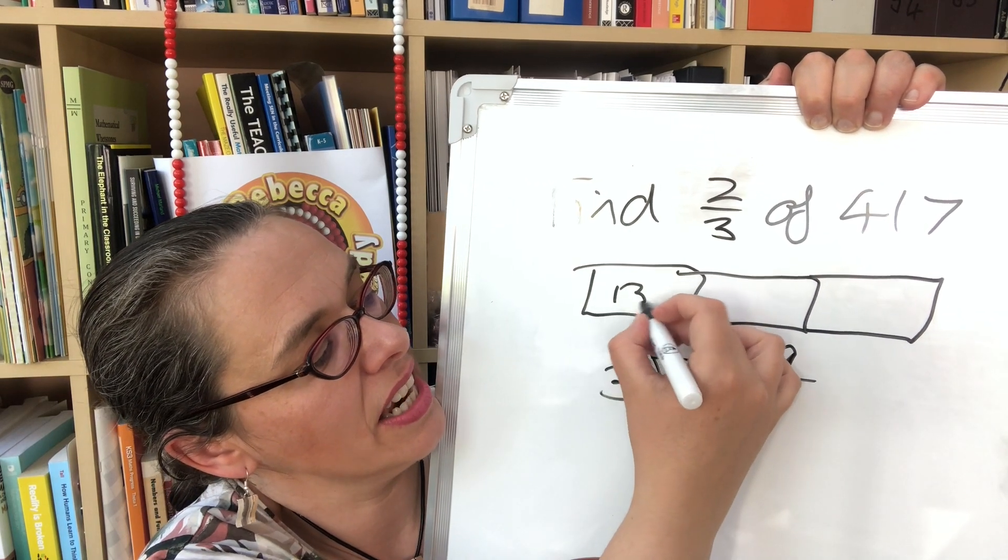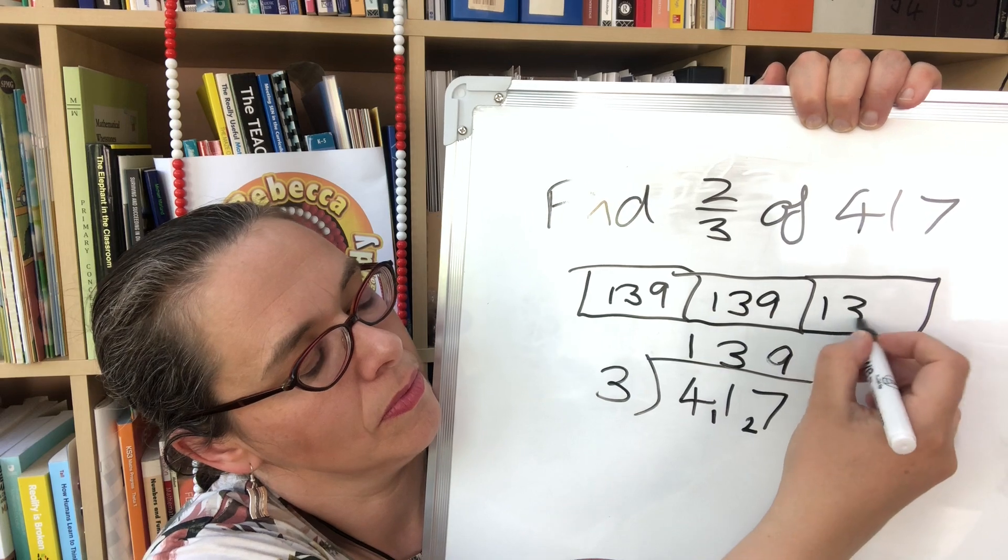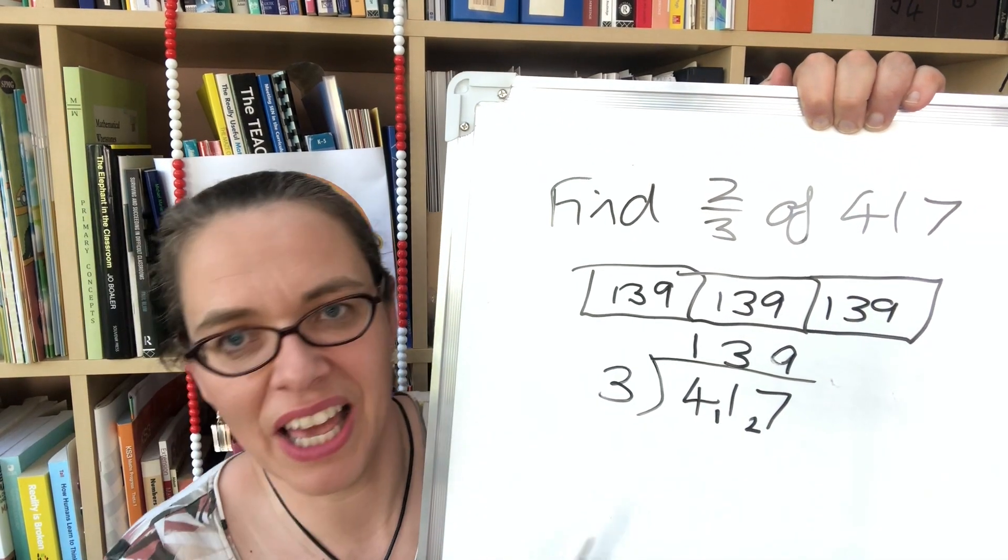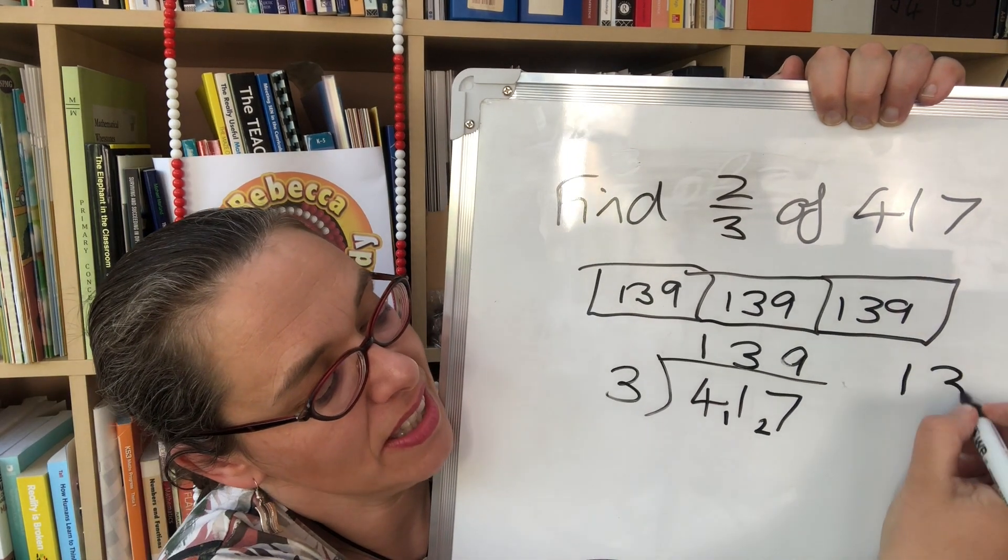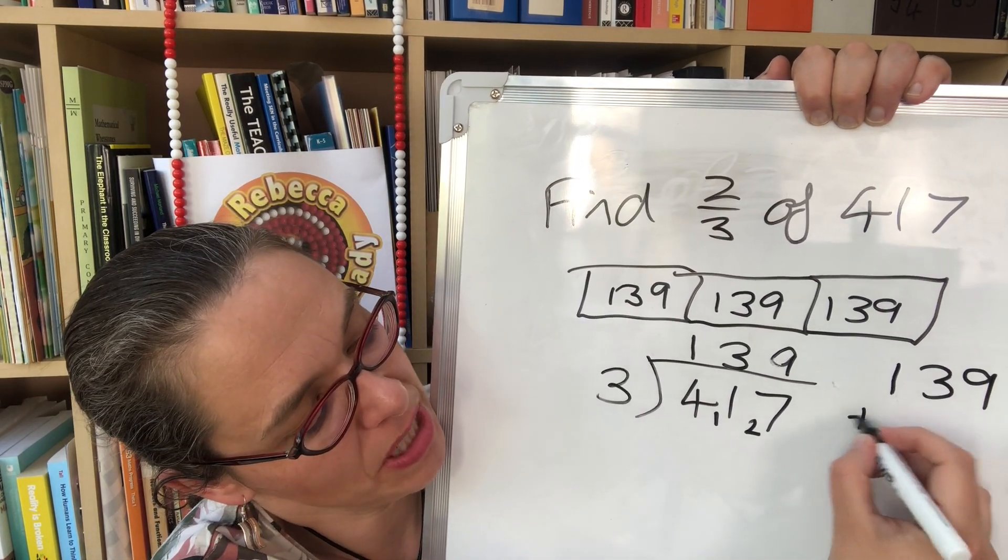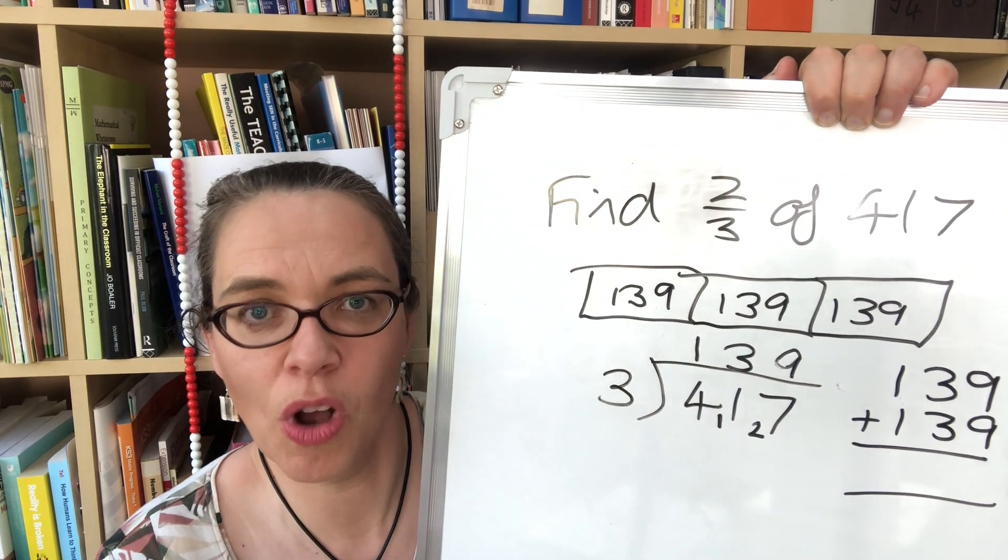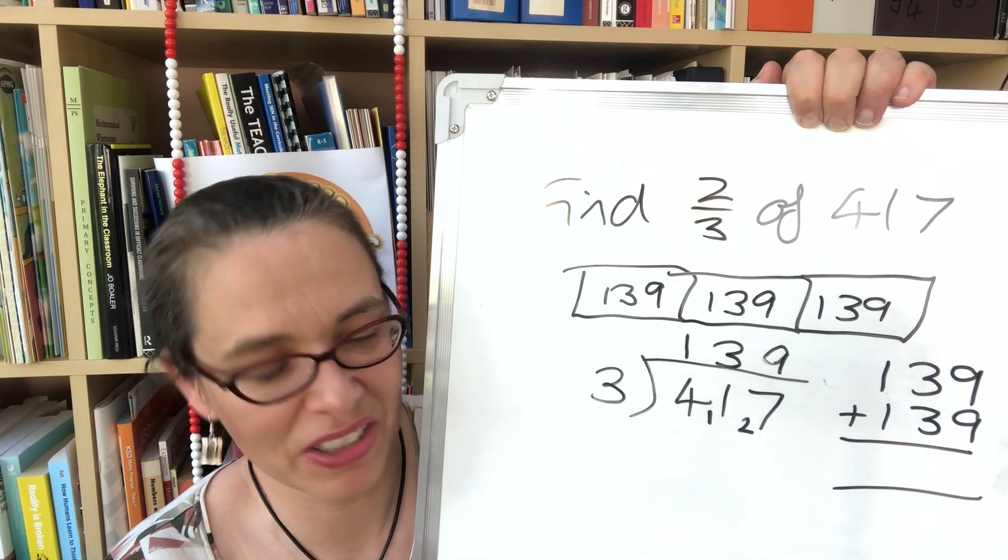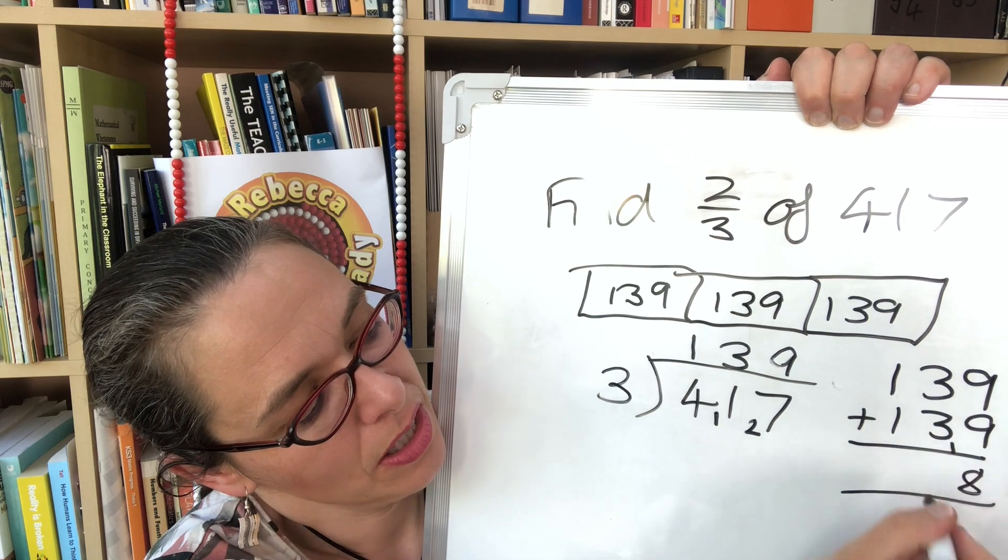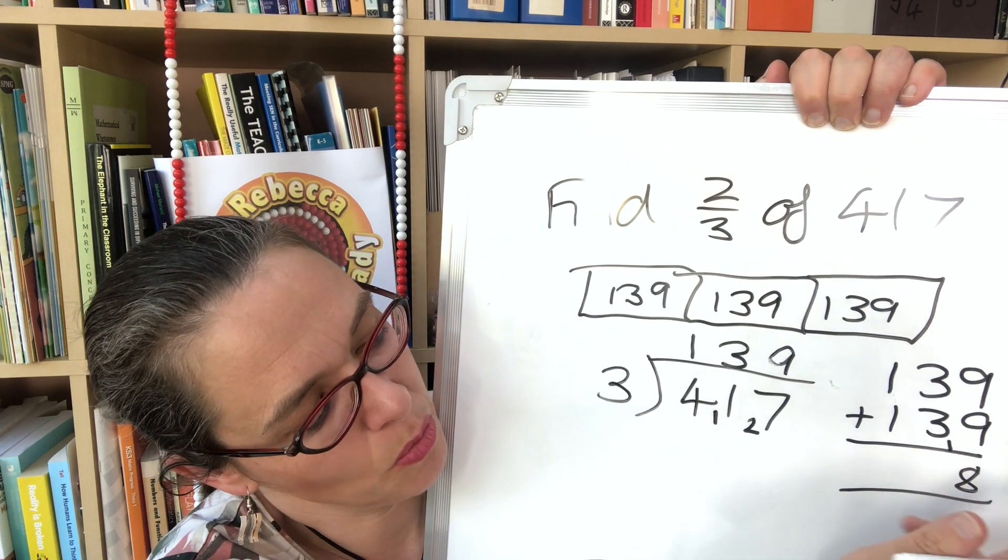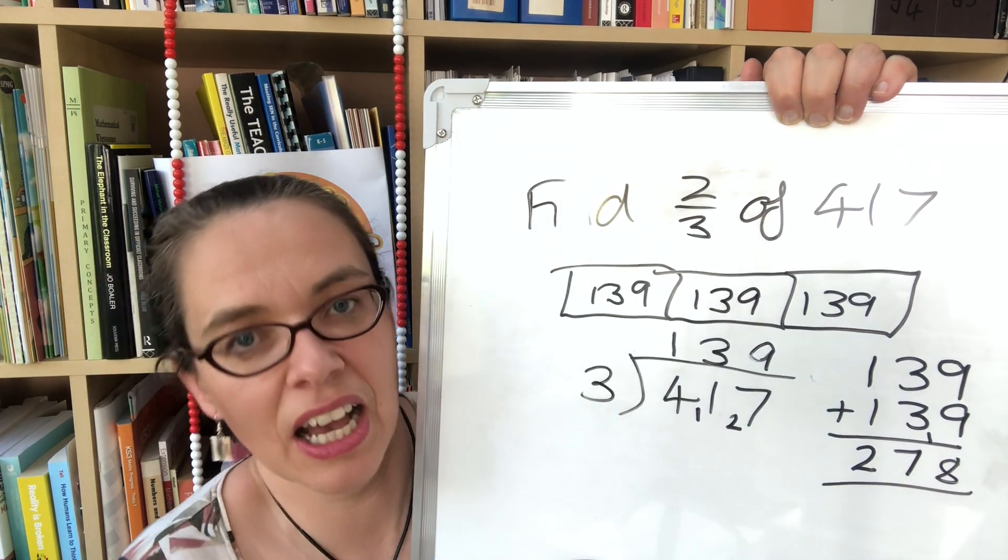And you can multiply the 139 by 2. Most children if they deeply understand what's going on they'll probably choose to add. And when they swap in that way it really does show deep understanding. 9 and 9 is 18. We get a 10. So we've got six tens plus the one from the ones. So it's seven tens all together. 278 is our answer.